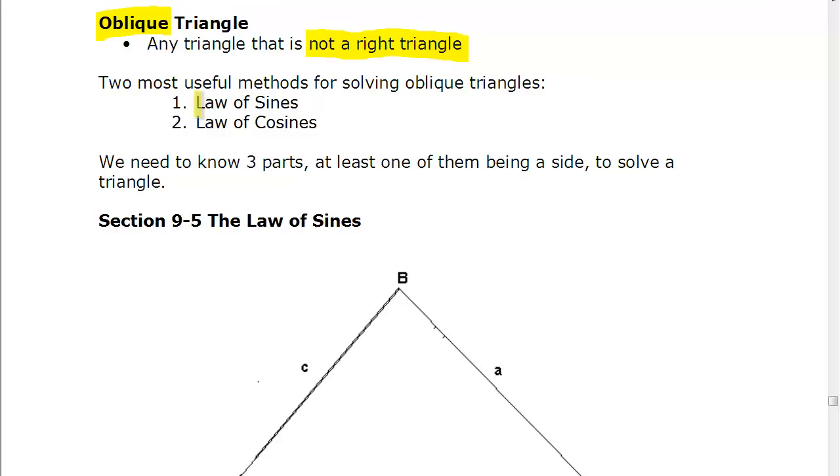We're going to focus on two methods: the law of sines and the law of cosines to solve these triangles. You need to keep in mind that because we're not dealing with right triangles, we have no Pythagorean theorem. Pythagorean theorem is true for a 90 degree angle or for a right triangle only. So I should not see any solutions that have Pythagorean theorem for these.